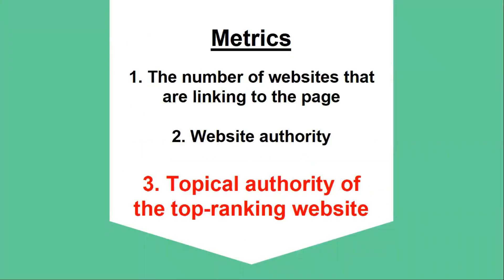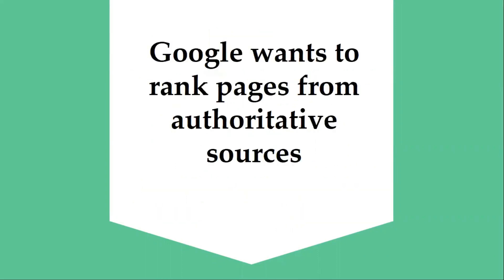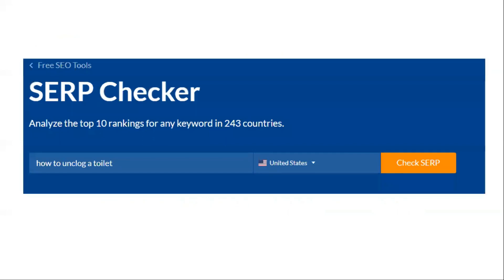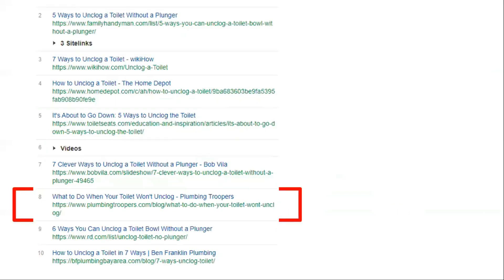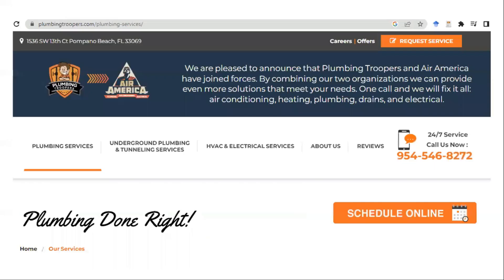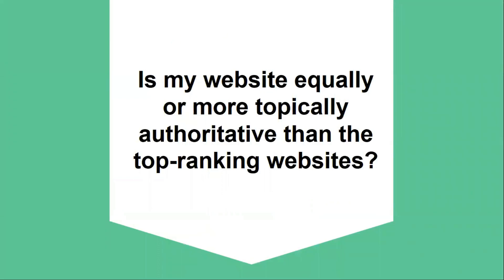Let's move on to the third part, which is topical authority of the top ranking websites. Google wants to rank pages from authoritative sources, and this goes beyond backlinks. For example, if we look at the SERP for 'how to unclog a toilet,' you'll see that a plumbing-specific site is outranking much more powerful websites with significantly more referring domains. This page comes from a website that's just about plumbing, so it's slightly more authoritative on that particular topic. The question you need to ask yourself is: is my website equally or more topically authoritative than the top ranking websites? If the answer is yes, that's a positive thing for you.